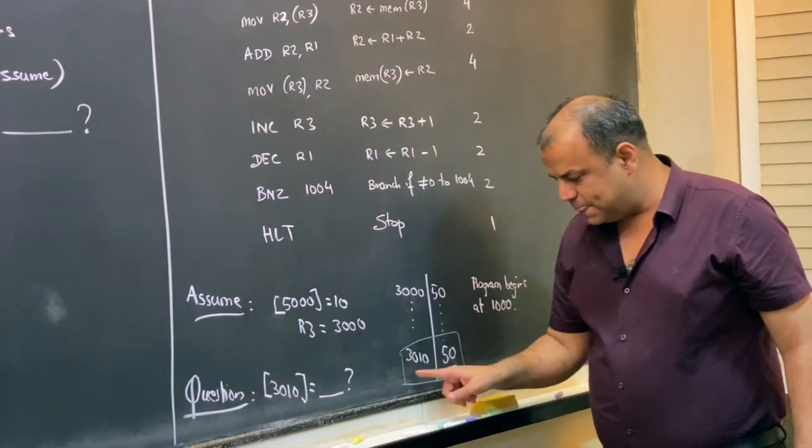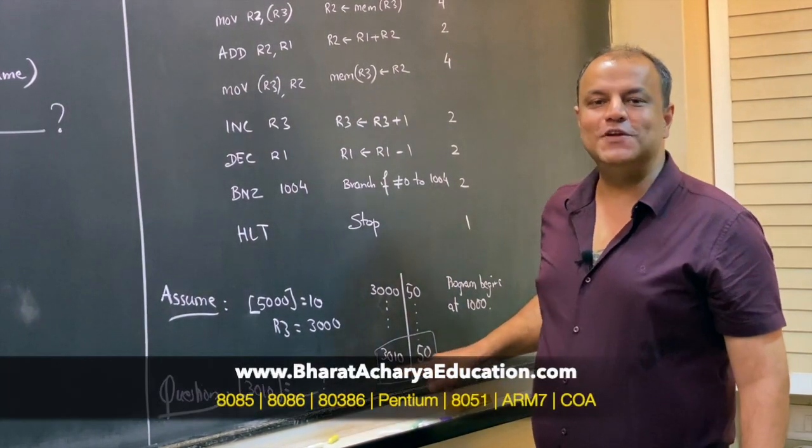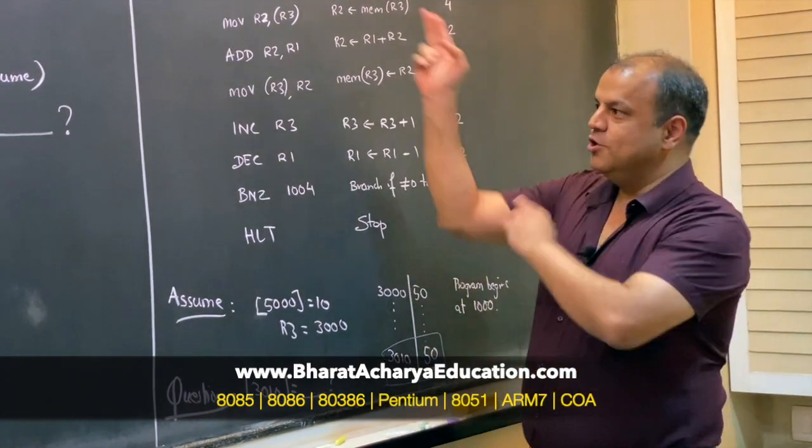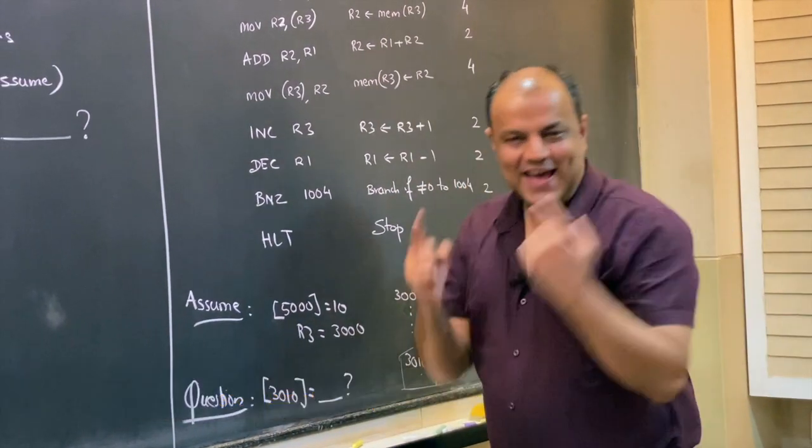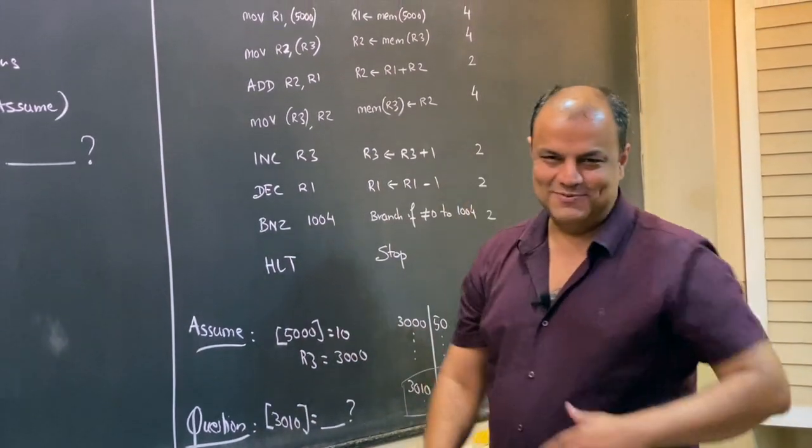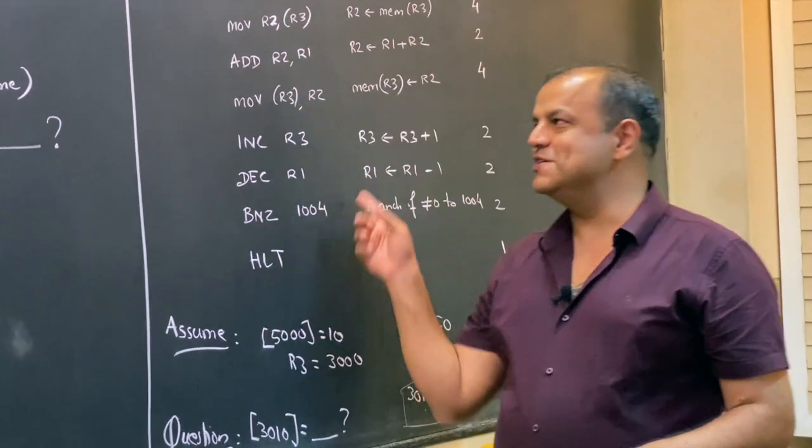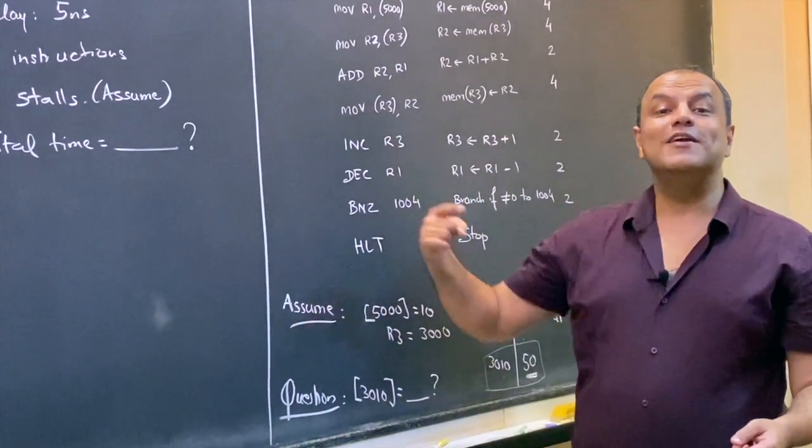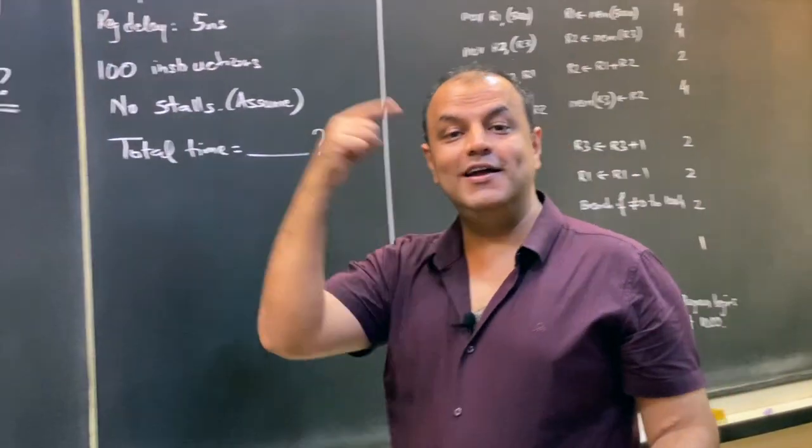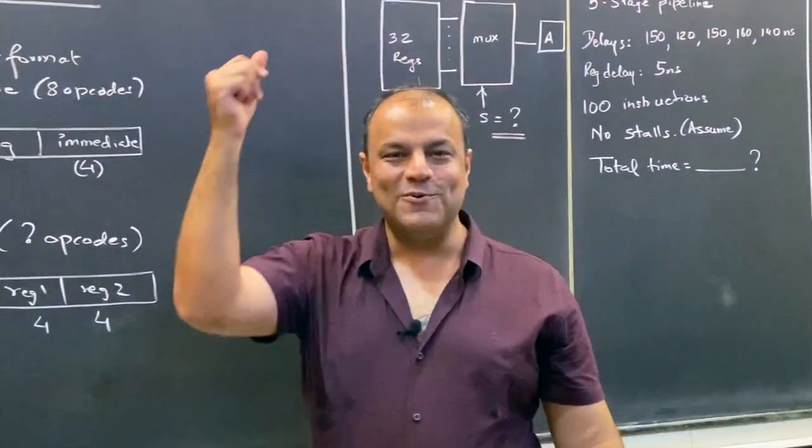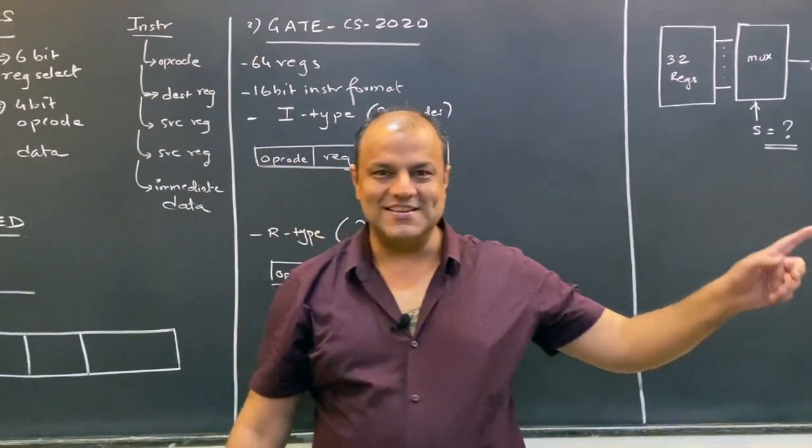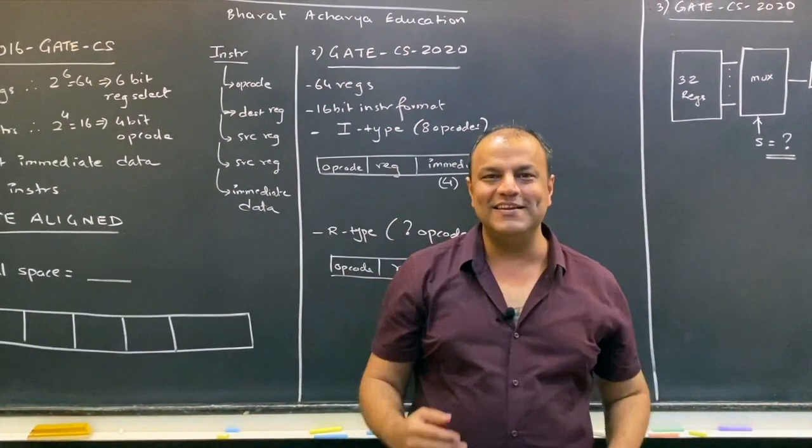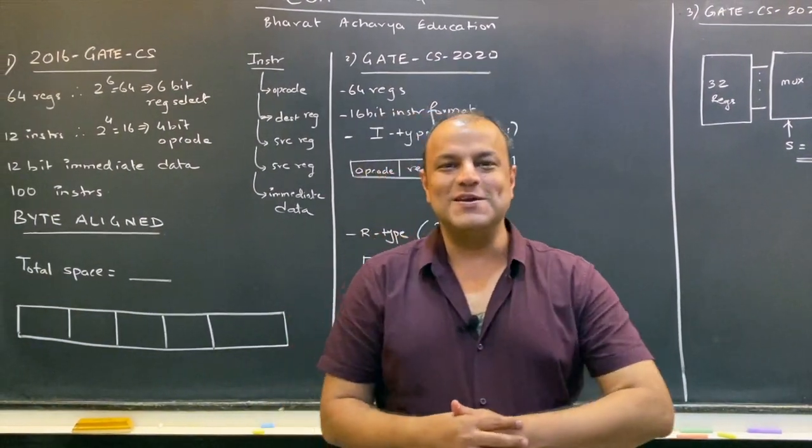After executing the program, what should be the data at location 3010? One single number is your answer. You have to analyze the program—it's not a straight line program. There is a branch that goes back to some location, creating a loop. You need to analyze all iterations of the loop to get the final answer. There are some questions that only the best students, the top category, solve.